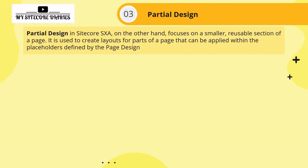Partial design in Sitecore SXA focuses on a smaller, reusable section of a page. The page design is for the entire page, whereas partial design is a smaller unit. It is used to create a layout for parts of a page that can be applied within the placeholder defined by the page design. Within the placeholder, you can also define your layout using partial designs.